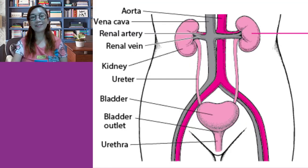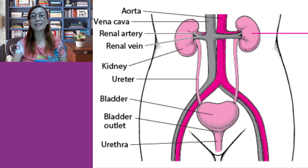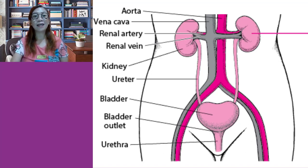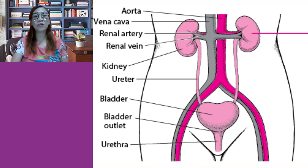Next are the ureters, which play an active role in urine transport. The ureters are two slender tubes, each 25 to 30 cm or 10 to 12 inches long and 6 mm or one-quarter inch in diameter. Each ureter runs behind the peritoneum from the renal hilum to the posterior aspect of the bladder, which it enters at a slight angle. The ureters carry urine from the kidneys to the bladder through contraction of smooth muscle layers in their wall, propelling urine into the bladder by peristalsis. Backflow is prevented by small valve-like folds of bladder mucosa that flap over the ureter openings.